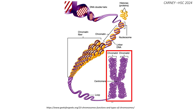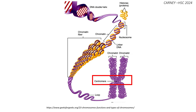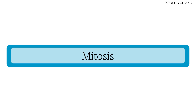Sister chromatids are identical copies of a single chromosome, and they are connected by a centromere. Mitosis is a type of cell replication involved in the growth and repair of cells. Cell division results in two identical daughter cells, referred to as diploid, meaning they have two complete sets of chromosomes, 2N.